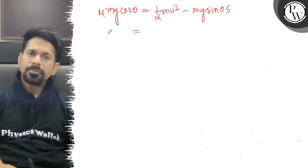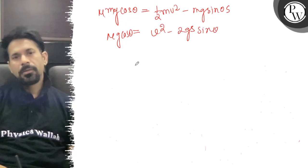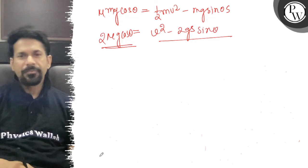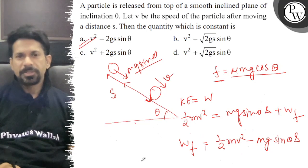So this constant value of mu g cos theta is equal to v square minus 2gs sin theta. Now this is 2 mu g cos, so this constant value is equal to v square minus 2gs sin theta. So the right answer of the question is A, all the best.